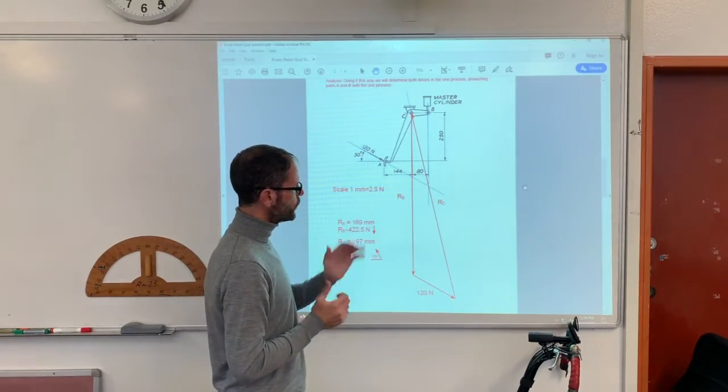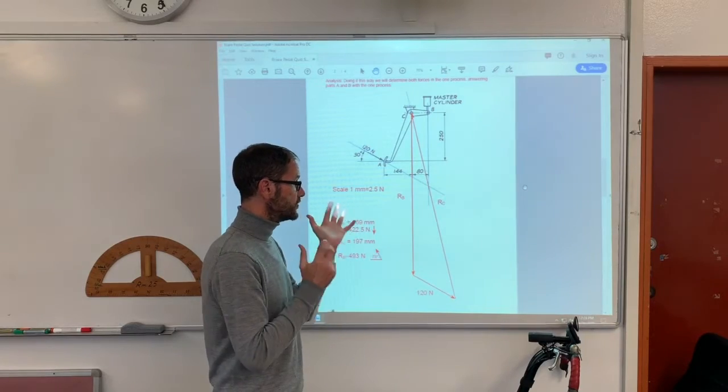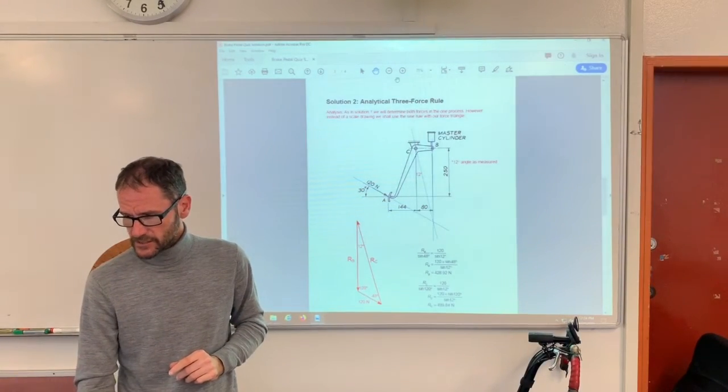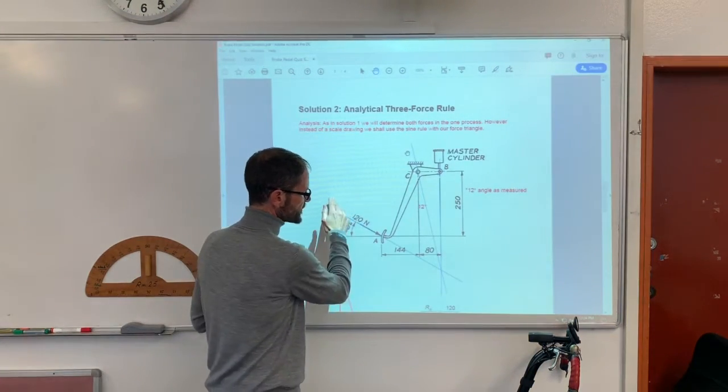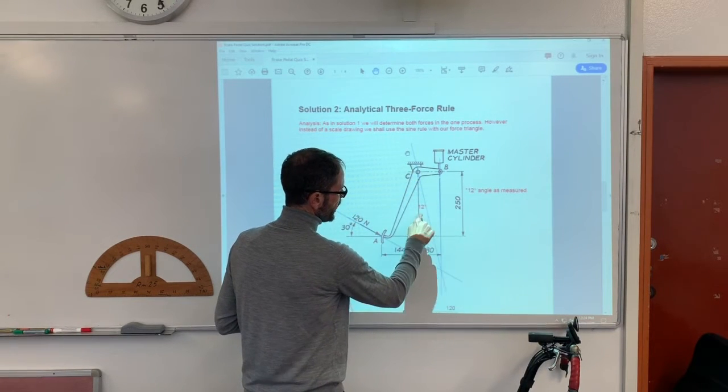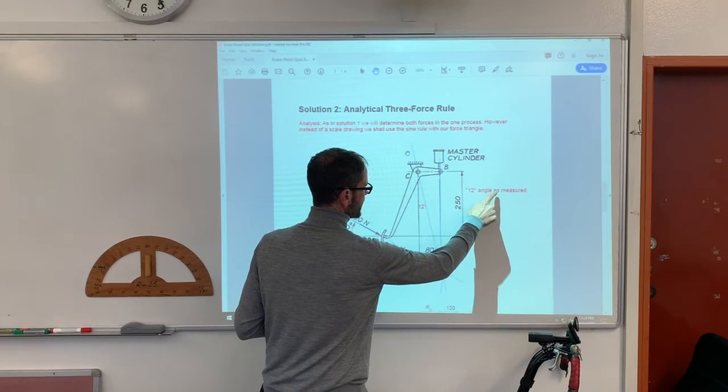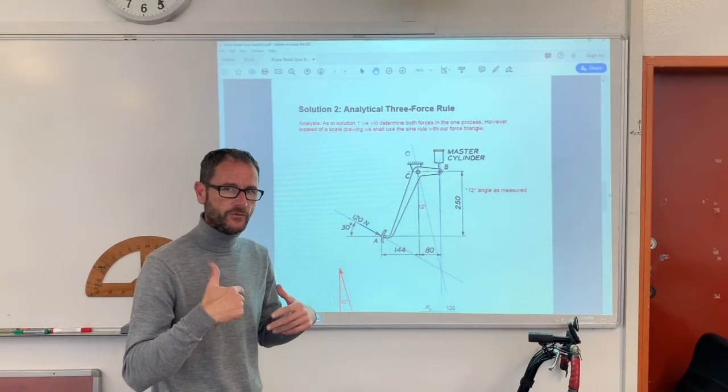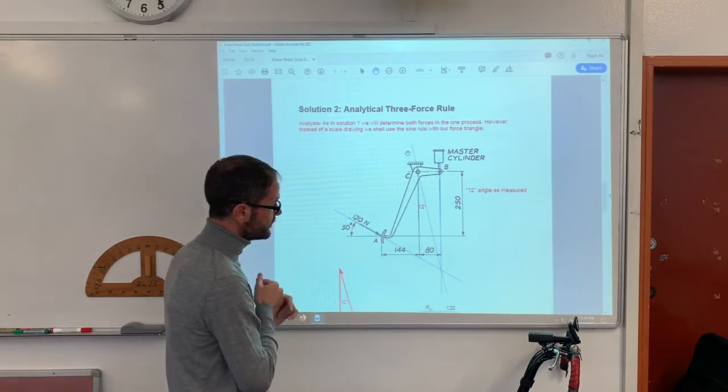So, if you use your scale drawing correctly, use your graphical solution correctly, it gives you quite a quick way to solve this problem. But, what if you decided you didn't want to do it graphically with a scale drawing? Can you use the sine rule? Well, yes you can. So, in this method here, I've done the same thing as I did before. I've extended the line of actions here and I've found the point of concurrency.